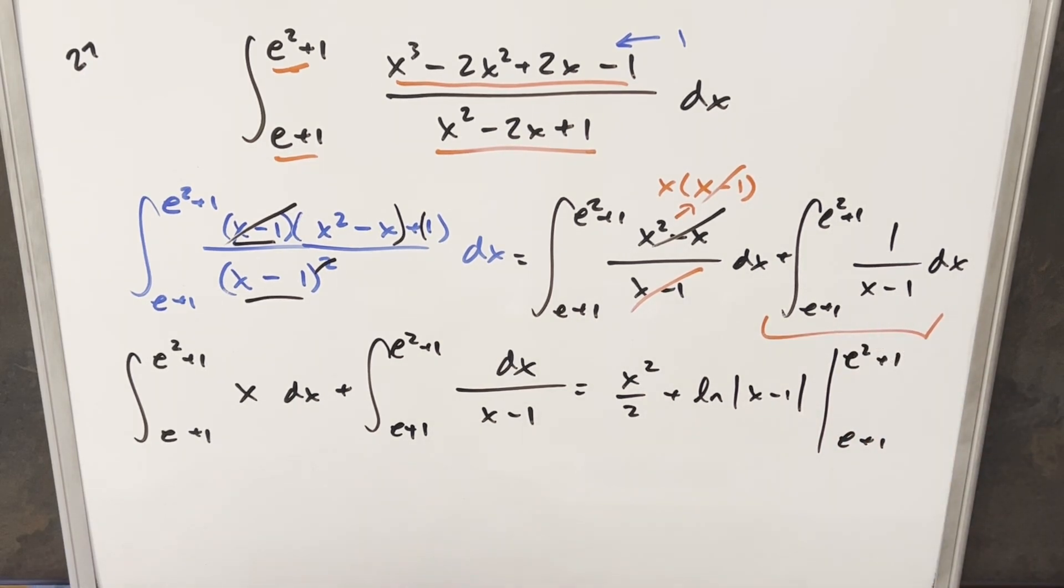And to finish it off, let's just evaluate this. So first evaluate, we had e squared plus 1. So we're going to have, this is going to become e squared plus 1 over 2, the e squared plus 1 squared. And here we're going to have plus natural log absolute value. And we plug in e squared plus 1, e squared plus 1 minus 1, the ones are gone, and we just have e squared here.